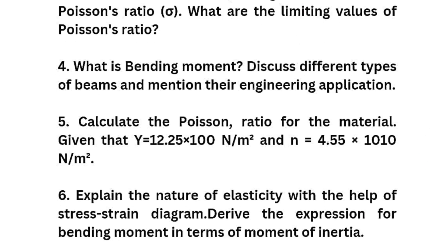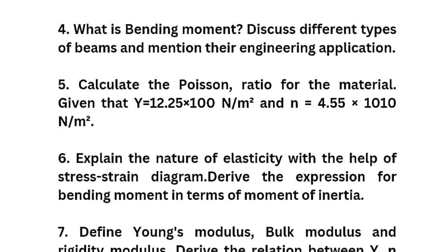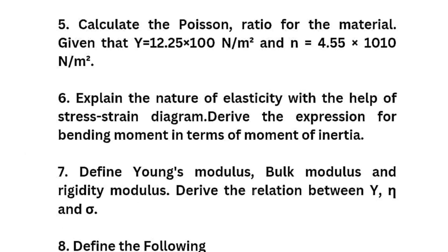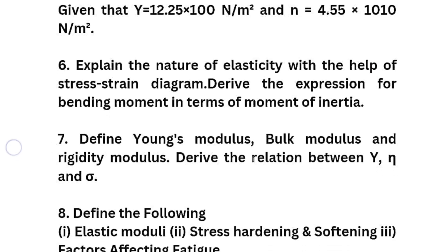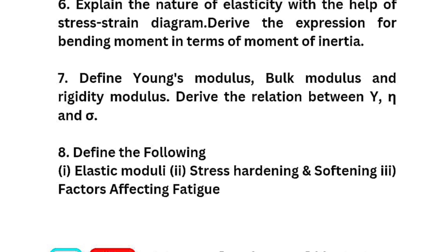Solve numericals on Poisson's ratio — refer to previous question papers for a variety of problems. Explain the nature of elasticity with the help of a stress-strain diagram. Derive the expression for bending moment in terms of moment of inertia. Define Young's modulus, bulk modulus and rigidity modulus. Derive the relationship between Young's modulus, rigidity modulus and Poisson's ratio. Finally, define elastic moduli, stress hardening and softening, and factors affecting elasticity.